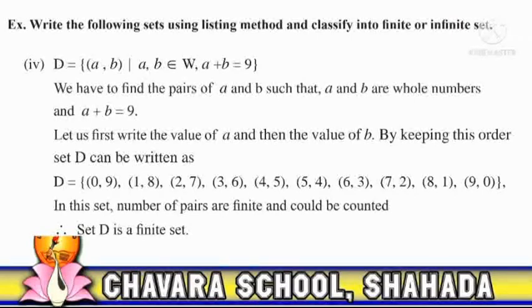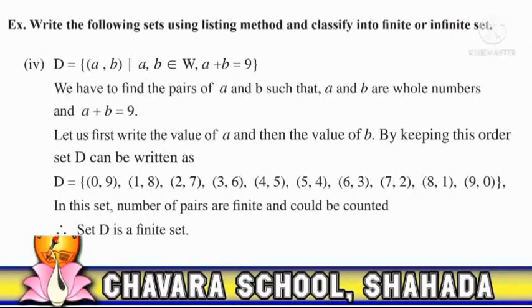Fourth: D is the set of all (a, b) such that a and b belong to whole numbers and the sum of a and b equals 9. We find all pairs where a + b = 9. Set D = {(0,9), (1,8), (2,7), (3,6), (4,5), (5,4), (6,3), (7,2), (8,1), (9,0)}. The number of pairs is finite and countable. Therefore, set D is a finite set.